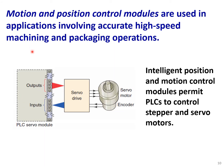Motion and position control modules are used in applications involving accurate high-speed machining and packaging operations. They are similar to PID modules but specifically designed for motion or position control. They accept encoder data and interface with a servo drive. They are a very specific type of PLC module designed for motion or position control.